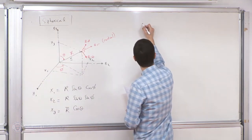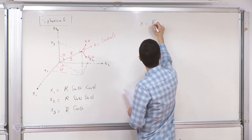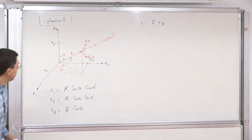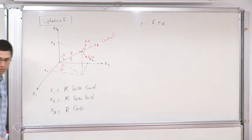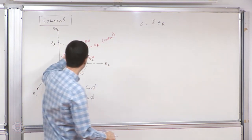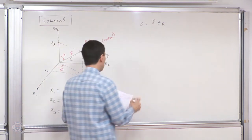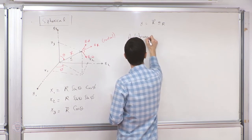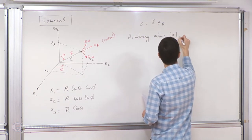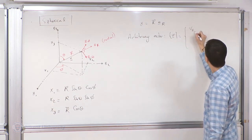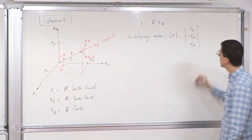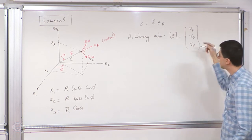Let's write a number of vectors in this coordinate system. The position vector is very simple — the radial basis vector I'll denote with capital R to distinguish it from the cylindrical system. So x is simply R·eR. That's the direction and that is the magnitude. Similarly, for an arbitrary vector v, it will have three components: a radial component, and two angular components vθ and vφ. The order we like to write things in is r, theta, then phi.